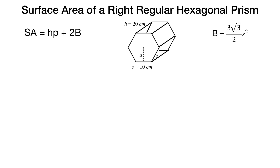Let's look at an example. I have a regular hexagonal prism where the height of the prism is 20 centimeters and one side of the base is 10 centimeters. My formula is SA equals HP plus 2 uppercase B. Uppercase B, the area of the base (a regular hexagon), is 3√3 over 2 times S². H is 20 centimeters. P is the perimeter of the base: one side is 10 centimeters, I have 6 sides, so 10 times 6 equals 60 centimeters.